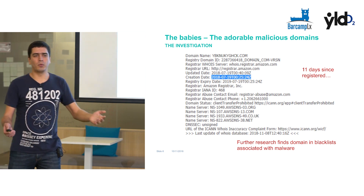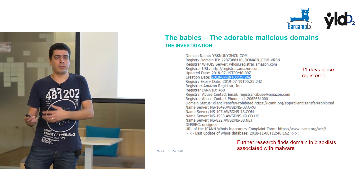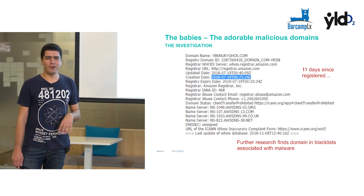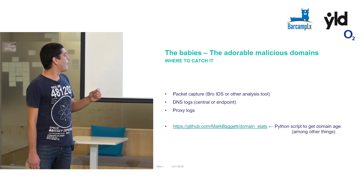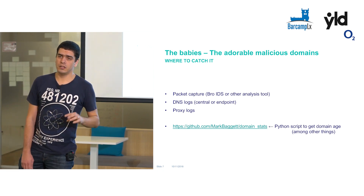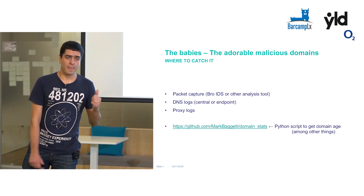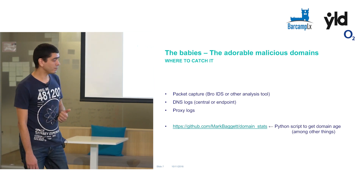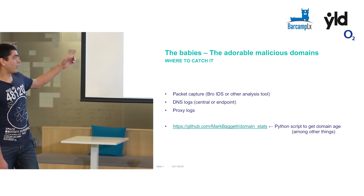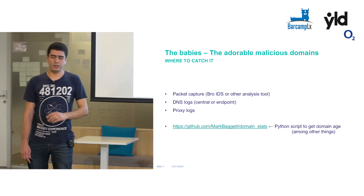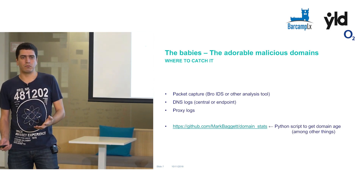At this point, our response team would go in and start investigating the laptop, trying to figure out how the malware actually got into the system. Where can you catch this? You can see it in two ways: the DNS traffic and the HTTP traffic. For DNS traffic, you can get it from your resolver logs, or if you're doing packet capturing you can use something like BroIDS, which is an awesome intrusion detection system that parses the packets into something readable.